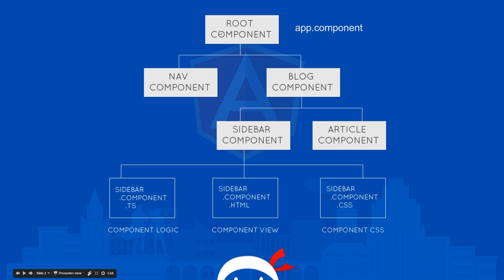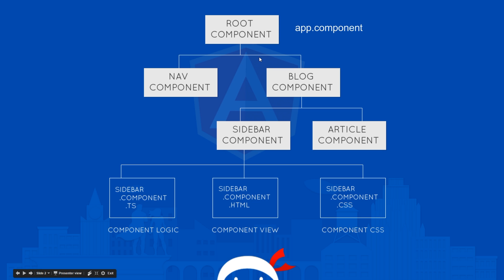The top component is called the root component. When we used the Angular CLI to create a new project a couple of tutorials back, it created the root component for us and that was called the app.component. That app.component surrounds every other component — it is your entire application. Within that root component we might have a component for the navigation, a component for the blog page, and within the blog page component we could have a sidebar component and a component for the actual article itself.